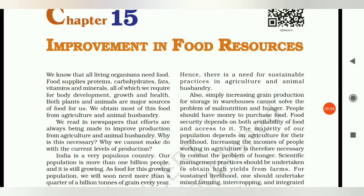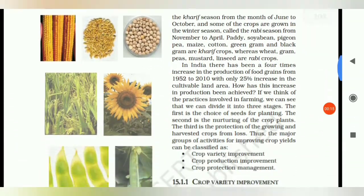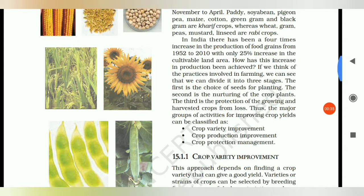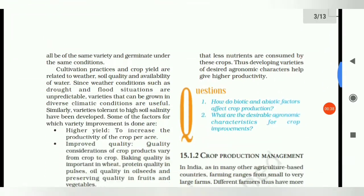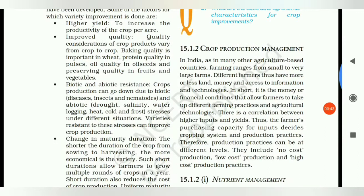Hello friends, last time we started Chapter 15, Improvement in Food Resources. I told you that if we want to improve crop yields, it will be passed in three stages: Crop Variety Improvement, Crop Production Improvement, and Crop Protection Management. Now we will go directly to Crop Production Management.